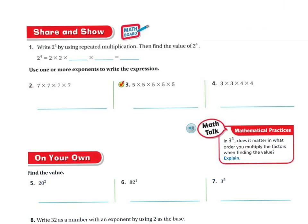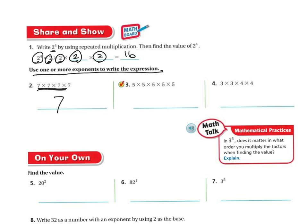Let's do a couple more. Write 2 to the 4th power using repeated multiplication and find its value. The base is 2, repeated 4 times: 2 times 2 is 4, times 2 is 8, times 2 is 16 — so the answer is 16. Next, write the expression using one or more exponents: the base is 7, multiplied 4 times, so the exponent is 4, giving us 7 to the 4th power.